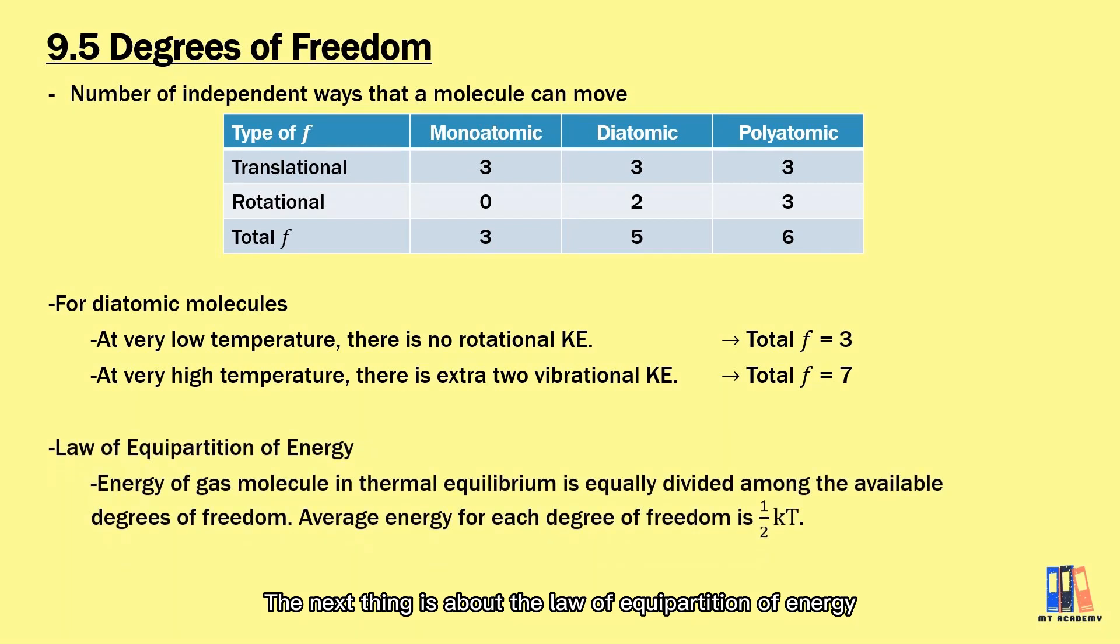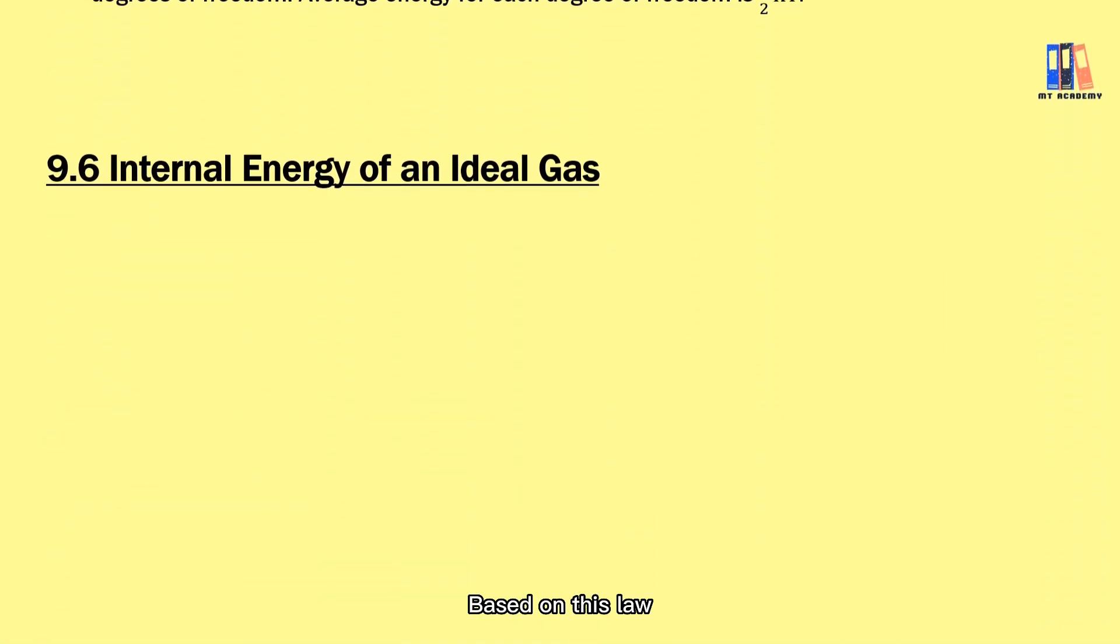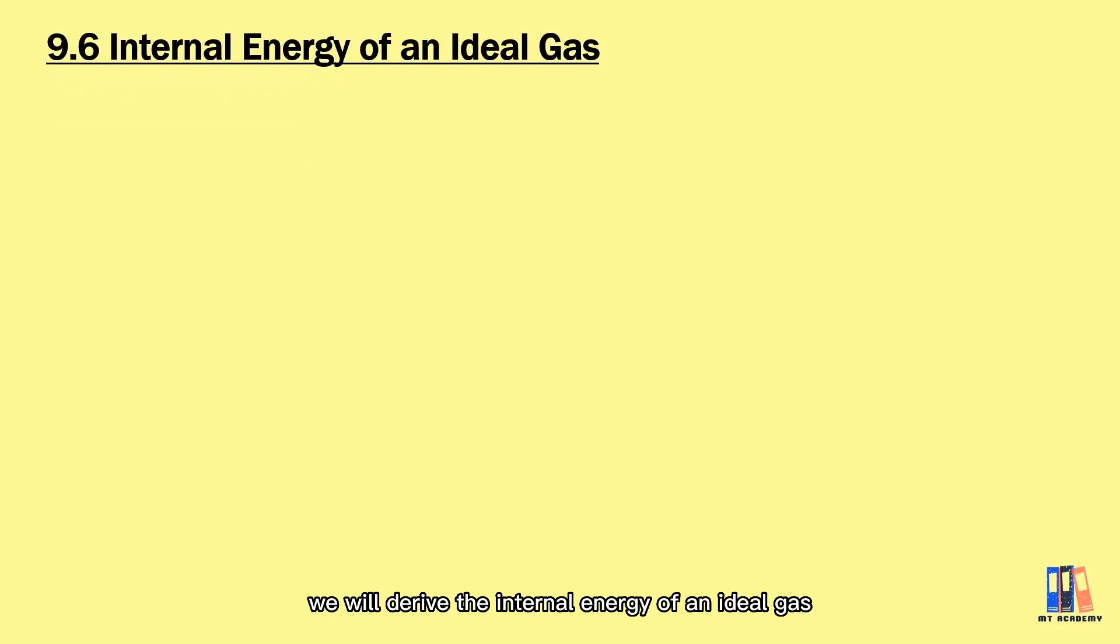The next thing is about the law of equipartition of energy. It states that the energy of a gas molecule in thermal equilibrium is equally divided among the available degrees of freedom. The average energy for each degree of freedom is given as 1 over 2 kT from the law. So based on this law, we derive the internal energy of an ideal gas.